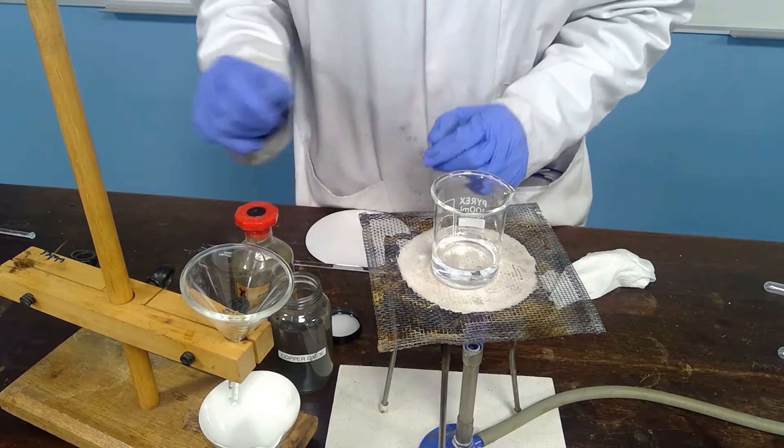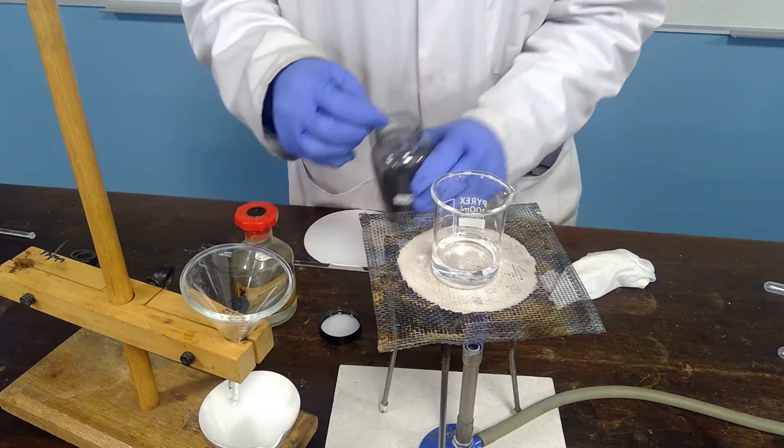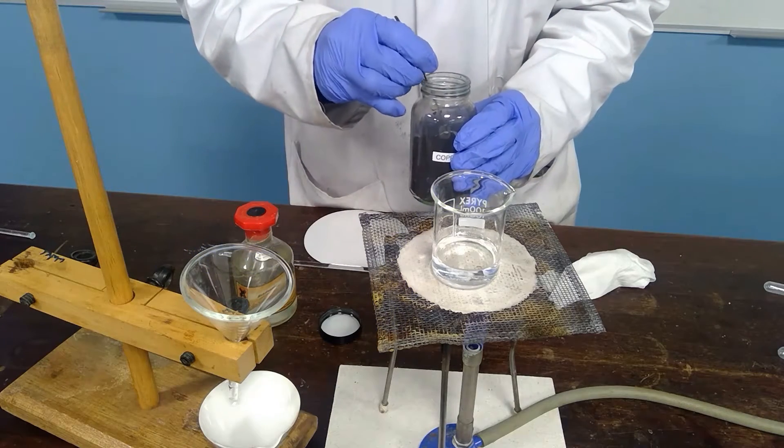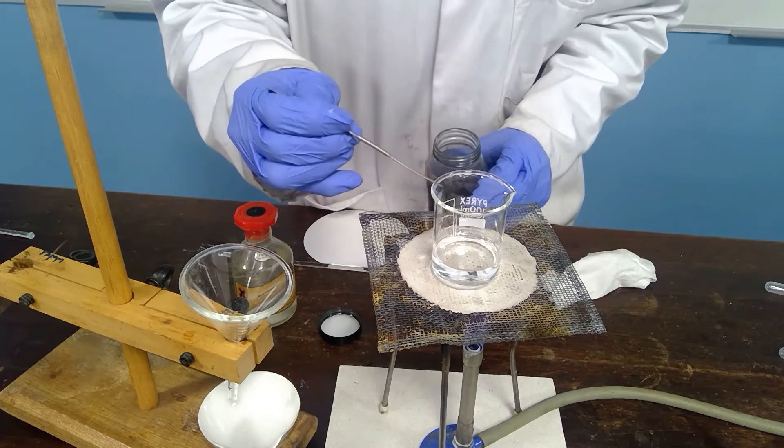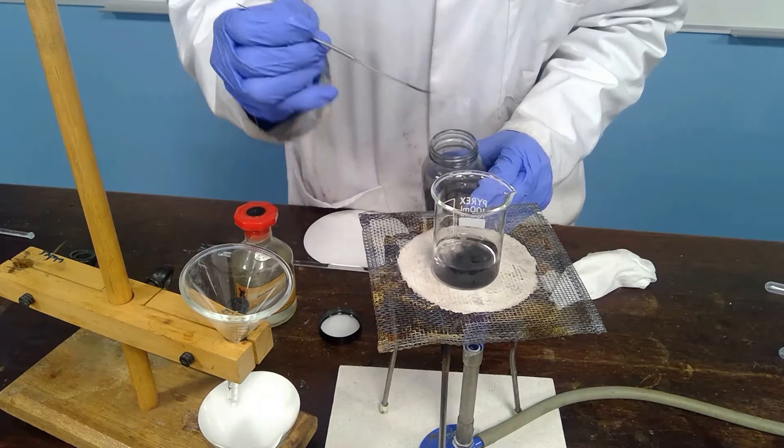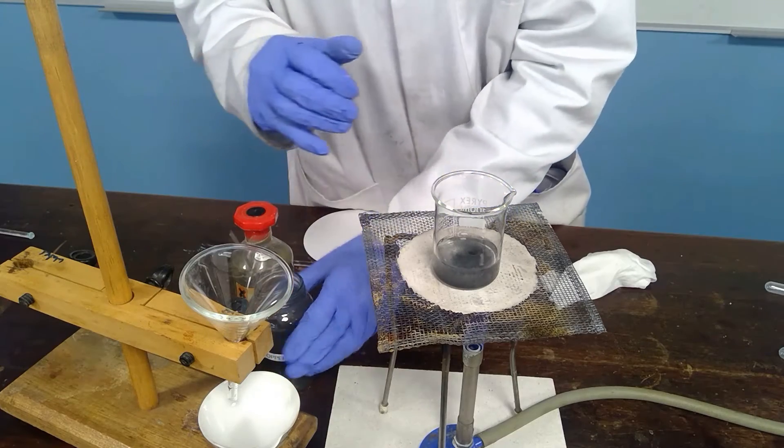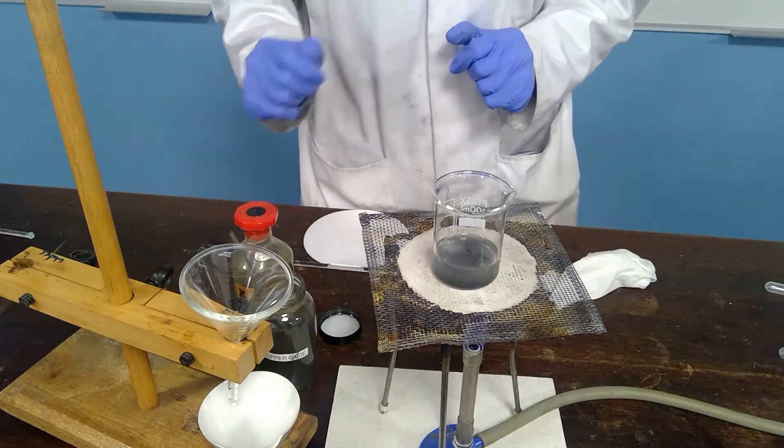Once the acid has warmed a little we will add some of the copper oxide to the acid. The copper oxide will neutralize the acid and make copper sulfate and water but while it is relatively cold this reaction will be slow.